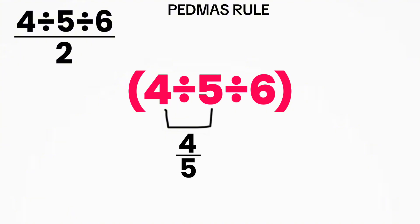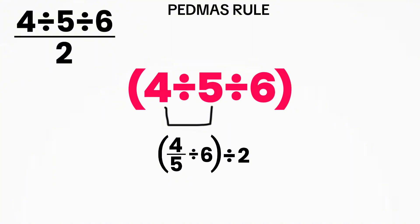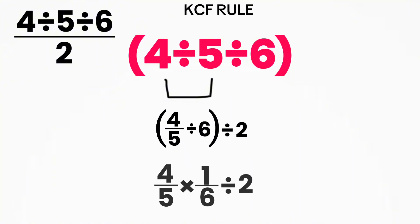Now we have 4 over 5 divided by 6. To divide fractions, we use the KCF rule. So 4 over 5 divided by 6 becomes 4 over 5 multiplied by 1 over 6. Now multiply straight across: 4 times 1 equals 4, and 5 times 6 equals 30. So inside the parentheses, we get 4 over 30.